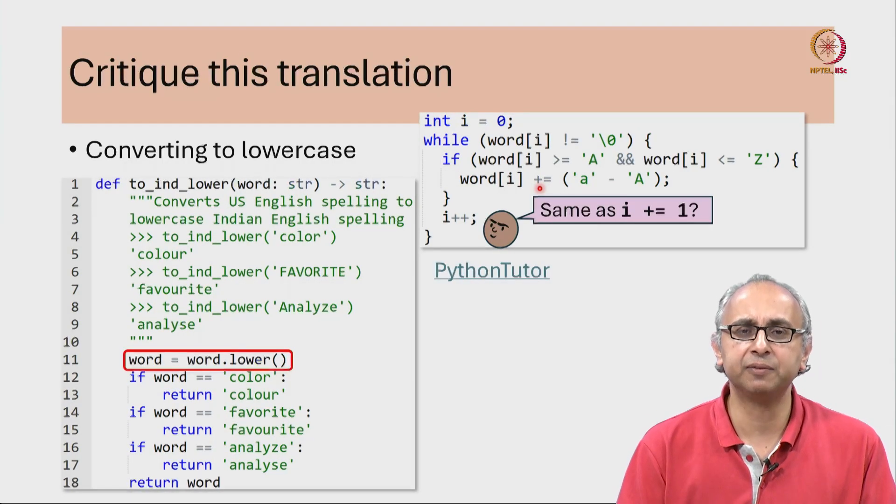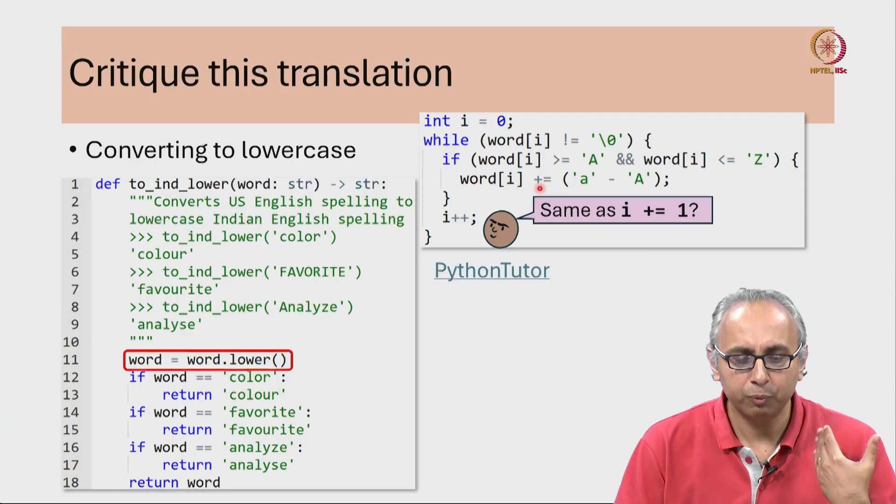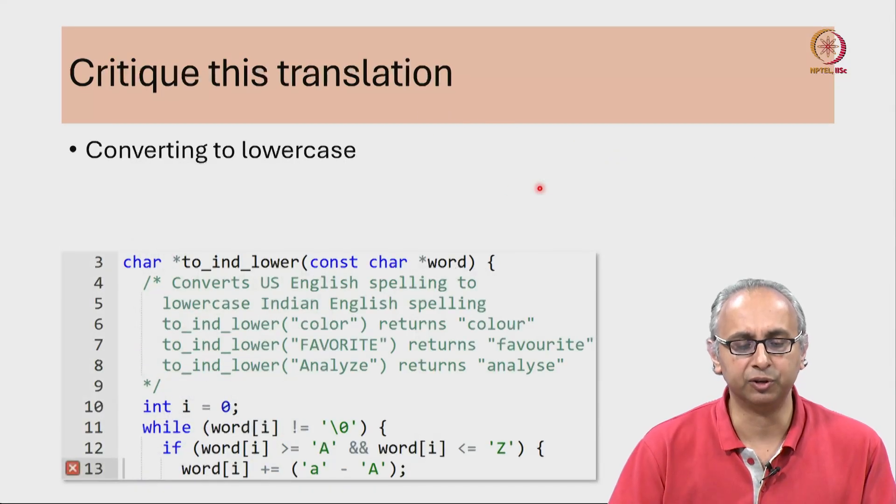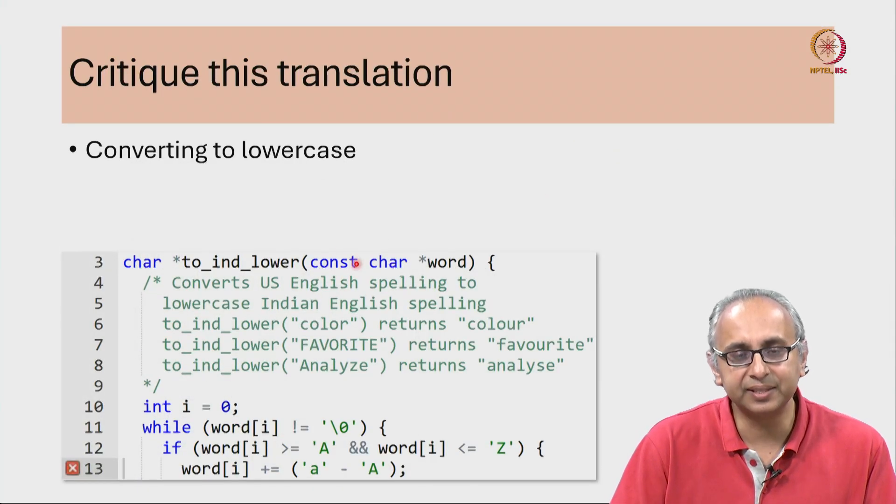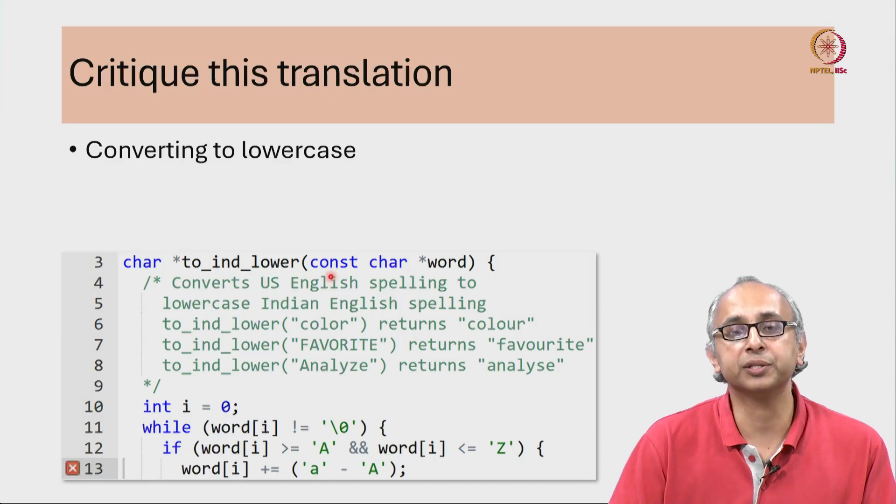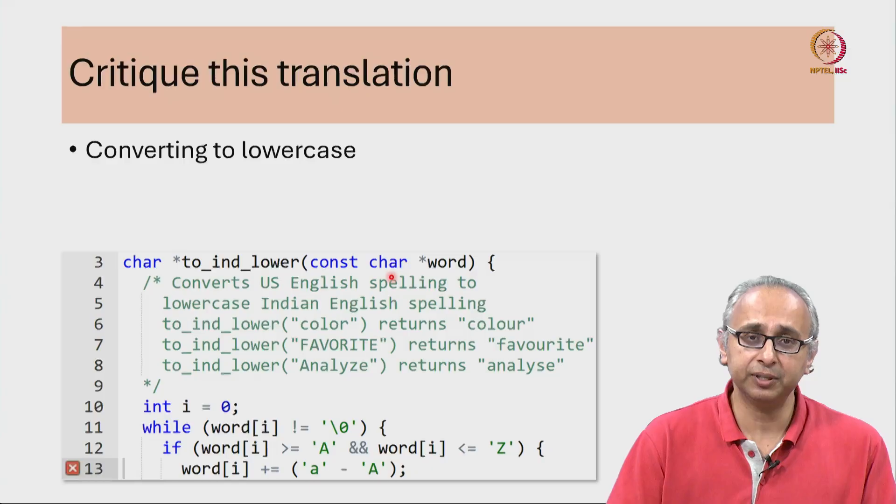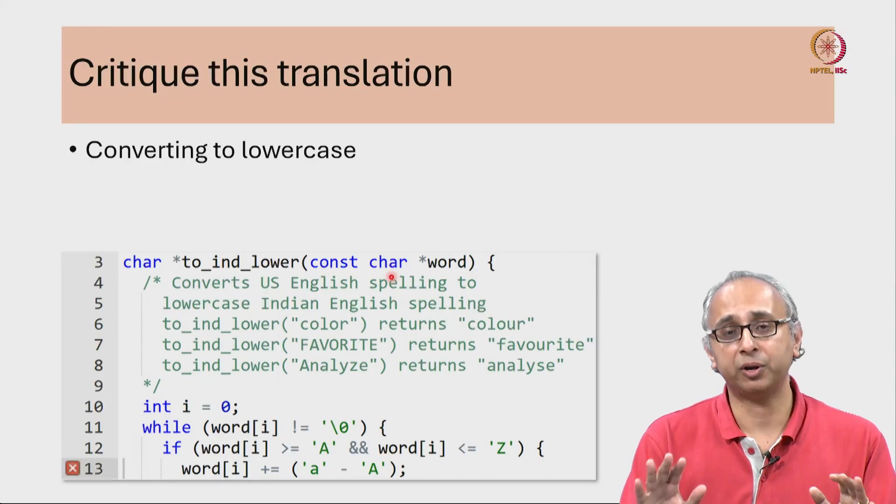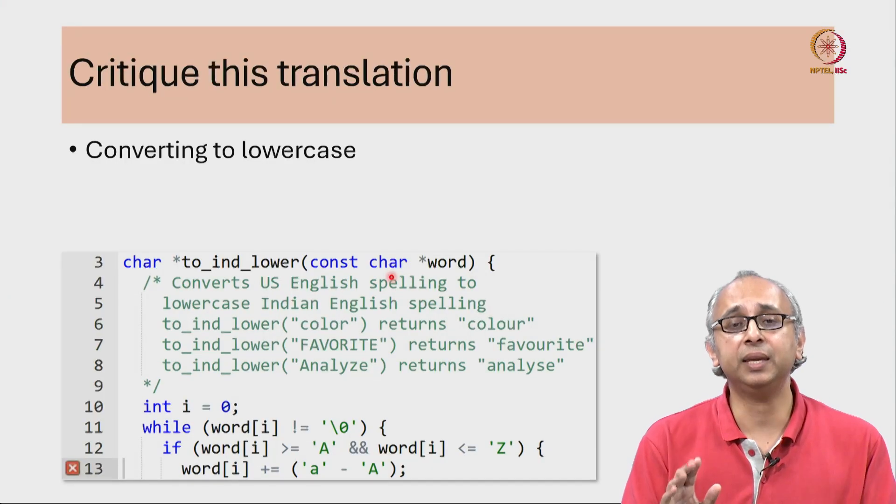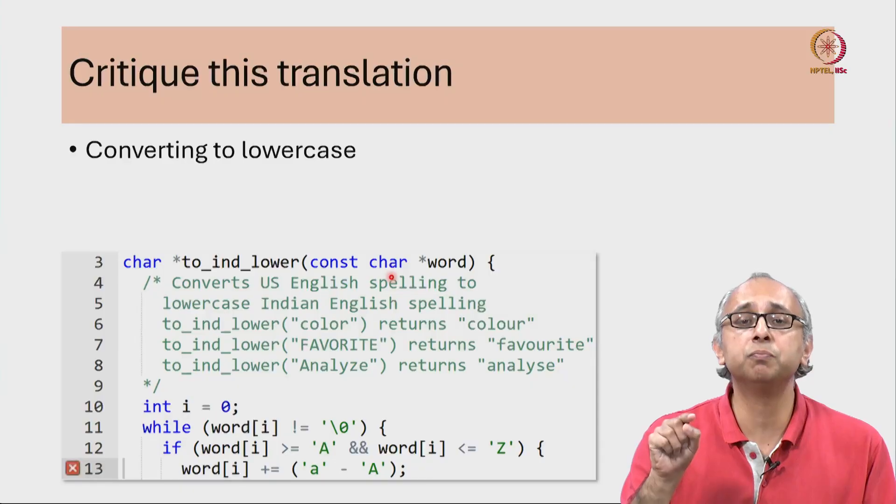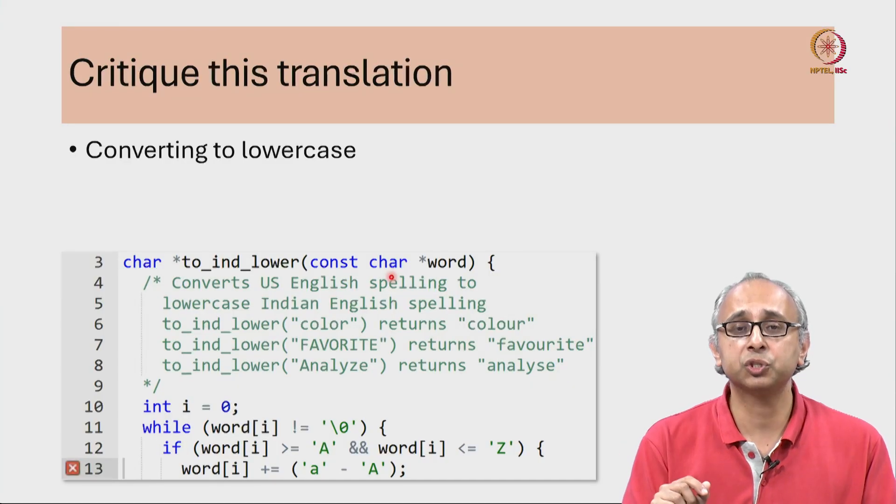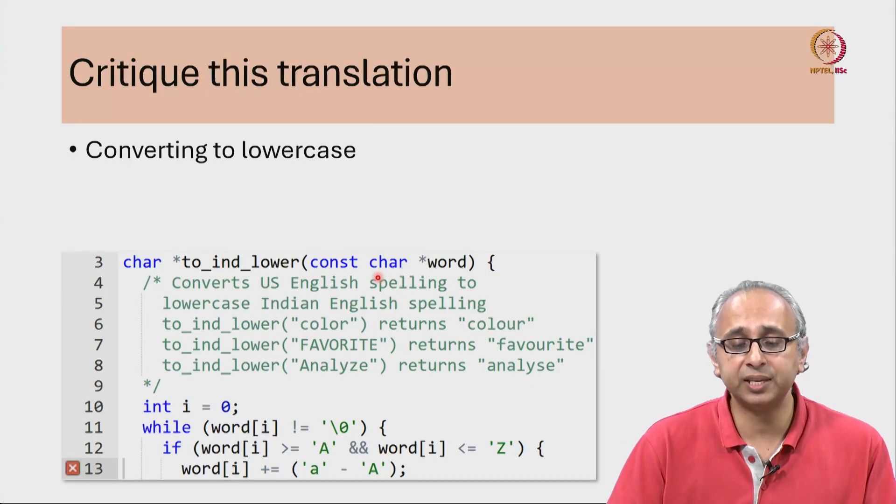We can help ourselves a little bit if when we are writing this C function, we add this special keyword called const. This reminds us as programmers that this word that is given should not be modified. Remember in C it is sometimes possible to modify the given string. So if instead of just saying char star word, we say const char star word.